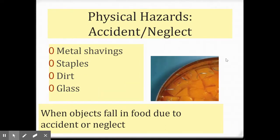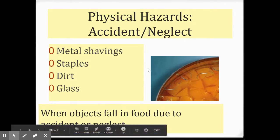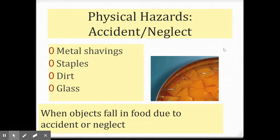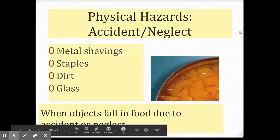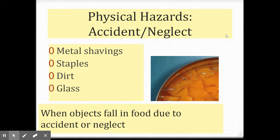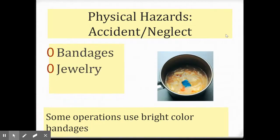Physical hazards can also be accidental or due to neglect. These are things that are not part of the food but get put into the food when we're preparing or serving it — like metal shavings off the side of a can, staples off a box or part of packaging, dirt, or glass. These objects fall into the food and can cause people to get sick or even cause internal injury. A bandage or jewelry falling into food could also be physical hazards. Hair is also considered a physical hazard.